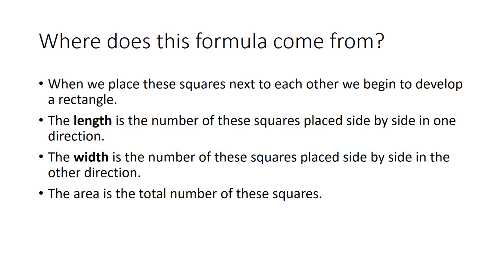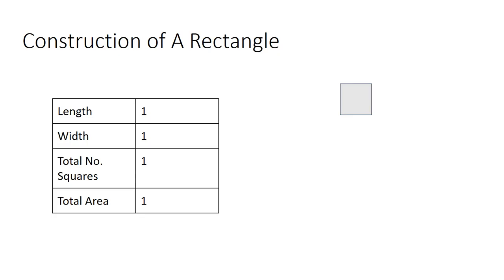The area is the total number of these unit squares. With one square, the length is 1, the width is 1, and the total area is 1 square unit. With two squares side by side, the length is 2, the width is still 1, and the total area is 2 square units. Adding another square gives a length of 3, width of 1, and area of 3 square units.